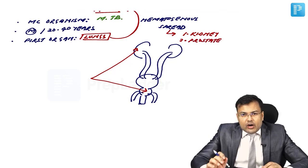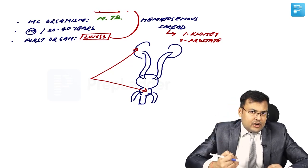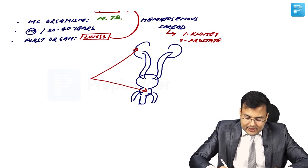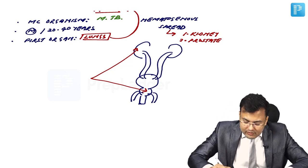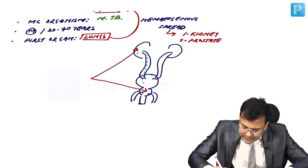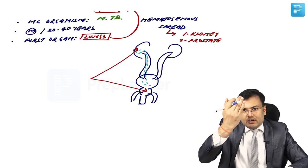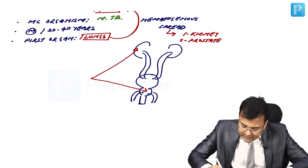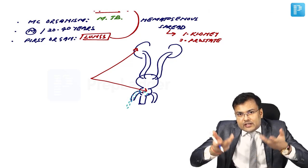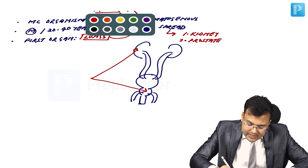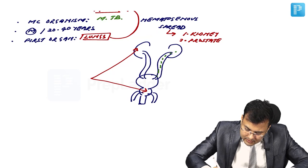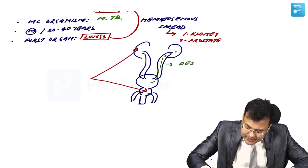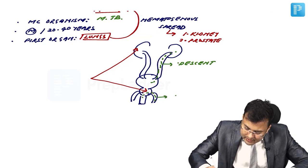The rest of the organs are involved by either descent or ascent of infection. When the kidney is involved, via urine the organism reaches the ureter and then the bladder — this is descent of infection. When the prostate is involved, via the prostatic urethra the infection may reach the vas deferens — this is ascent of infection.